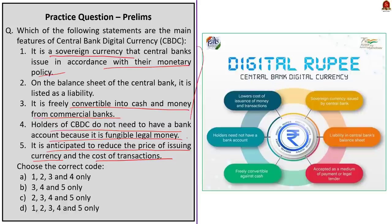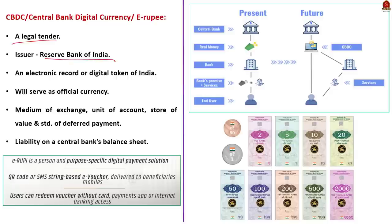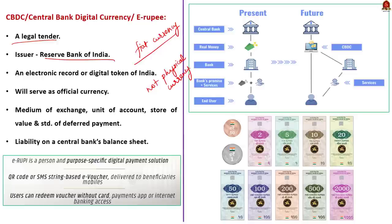CBDC, that is Central Bank Digital Currency, is a legal tender issued by RBI in a digital form. It is the same as fiat currency and is exchangeable one-on-one with fiat currency. Only its form is different — it is not a paper-like physical currency. It is a fungible legal tender for which the holders need not have a bank account. CBDC will appear as a liability on the RBI's balance sheet. Please do not confuse E-Rupee with E-Rupee — both are different. E-Rupee is a person-specific or purpose-specific digital voucher, whereas E-Rupee is a digital currency which the RBI is contemplating.